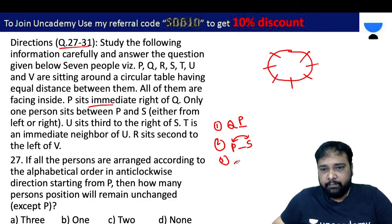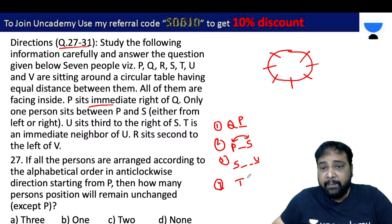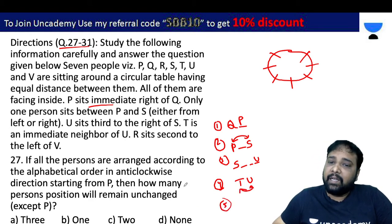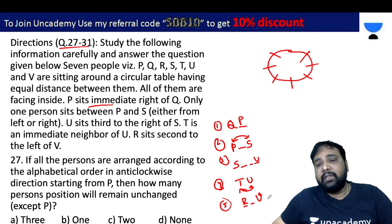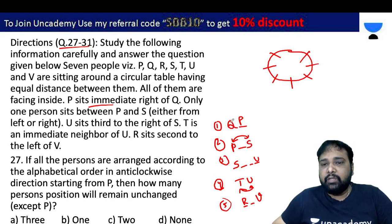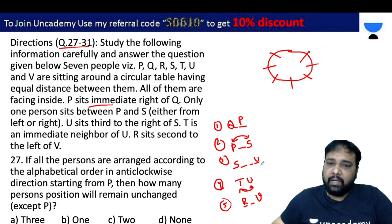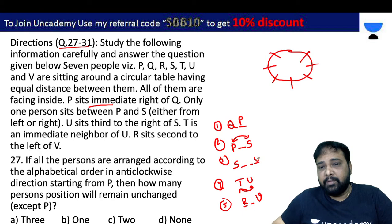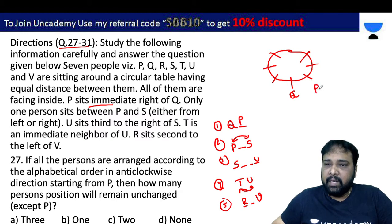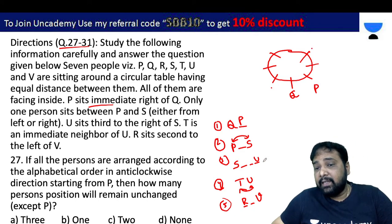U is the third to the right of S. T is an immediate neighbor of U — T sits right next to U. R is the second to the left of V. Working through the circular arrangement, U has two possible positions based on S's placement, giving us two cases to consider.